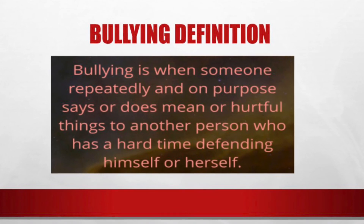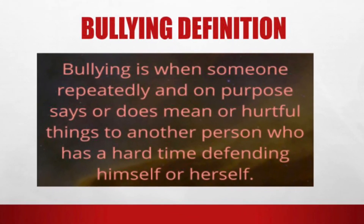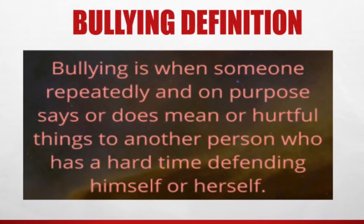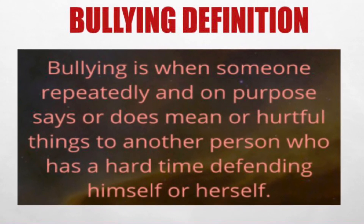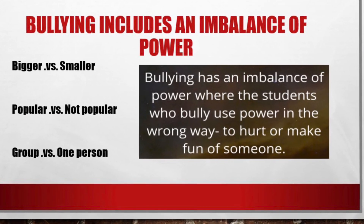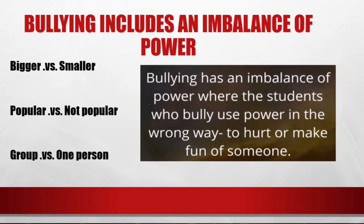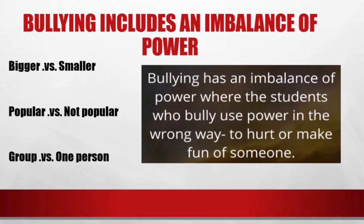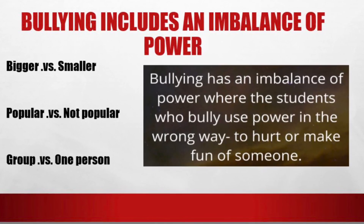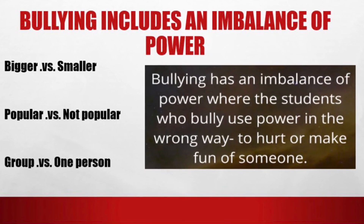So now we'll define bullying. Bullying is when someone repeatedly and on purpose says or does mean or hurtful things to another person who has a hard time defending himself or herself. Bullying includes an imbalance of power, such as bigger versus smaller, popular versus not popular, or group versus one person. Students who bully use that power in the wrong way to hurt or make fun of someone.